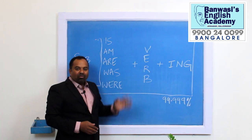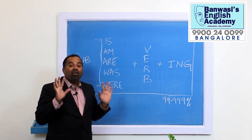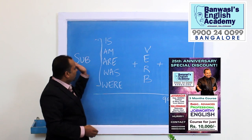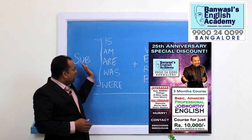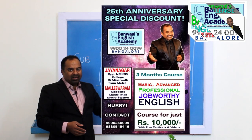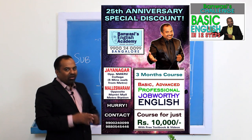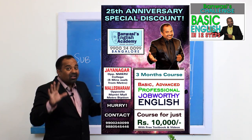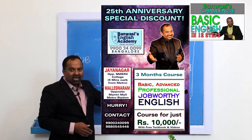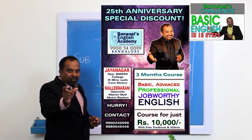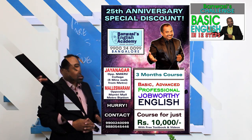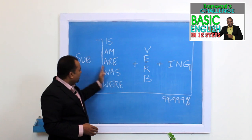So we will continue to practice. I guarantee these 5 forms. This is the rule with AM, ARE, WAS, WERE that you need to understand.